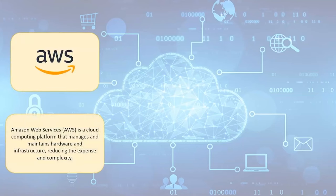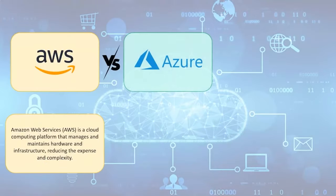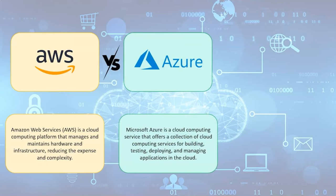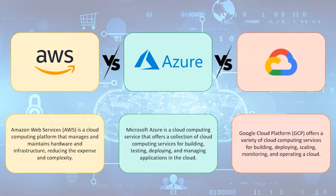Amazon Web Services, or AWS, is a cloud computing platform that manages and maintains hardware and infrastructure, reducing the expense and complexity of purchasing and running resources on-site for businesses and individuals. These resources are available for free or for a fee per usage. Microsoft Azure is a cloud computing service that offers a collection of services for building, testing, deploying, and managing applications in the cloud, including remotely hosted and managed versions of Microsoft technology. Google Cloud Platform offers a variety of cloud computing services for building, deploying, scaling, monitoring, and operating a cloud. The services are identical to those that power Google products such as Google Search, Gmail, YouTube, and Google Drive.